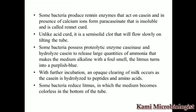The sixth point says that different types of bacteria can utilize casein, and they produce an enzyme called rennin. When rennin reacts with casein, we get rennet curd. The casein and rennin combine in the presence of calcium to make paracaseinate, which is insoluble — this is called rennet curd.